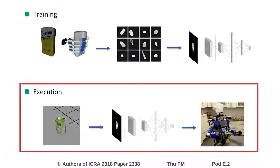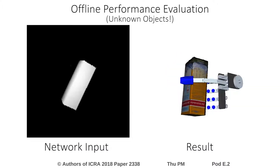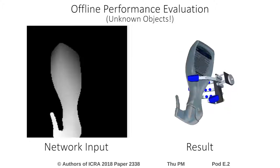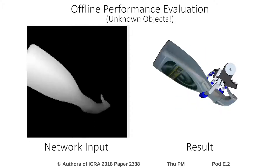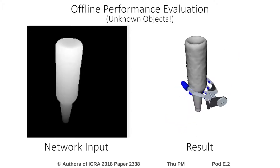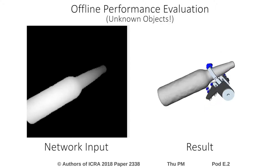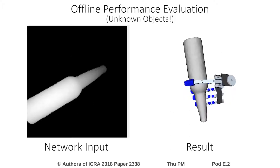After successfully training the network, we can use real-world camera data or simulated input for execution and evaluation purposes. The evaluation is performed on objects which were not part of the training dataset. The left image displays the input of the network, while the right image visualizes the resulting grasp. The network has clearly learned to transfer grasp knowledge from training objects to unknown objects.